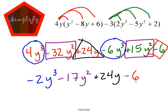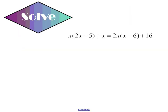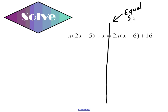Now this time we actually introduce an equal sign. I'm going to draw a line right down my problem, because I'm actually going to be able to solve this. The reason I can solve it is because I have an equal sign — if I don't have an equal sign, I can't solve it. So let's go ahead and do our distributions first.